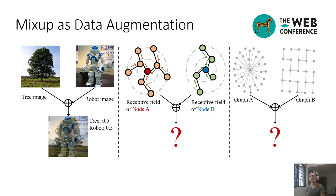Although Mixup is effective in augmenting the image data, designing Mixup methods for graph learning is challenging. The challenges are rooted in the irregularity and connectivity of graph data.